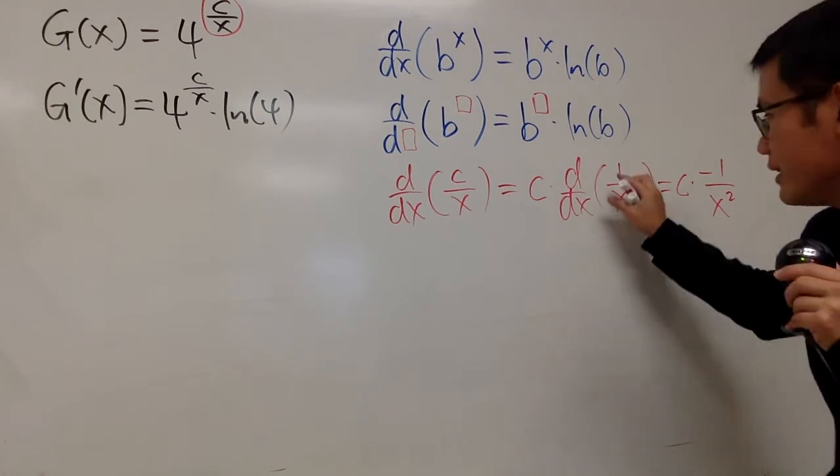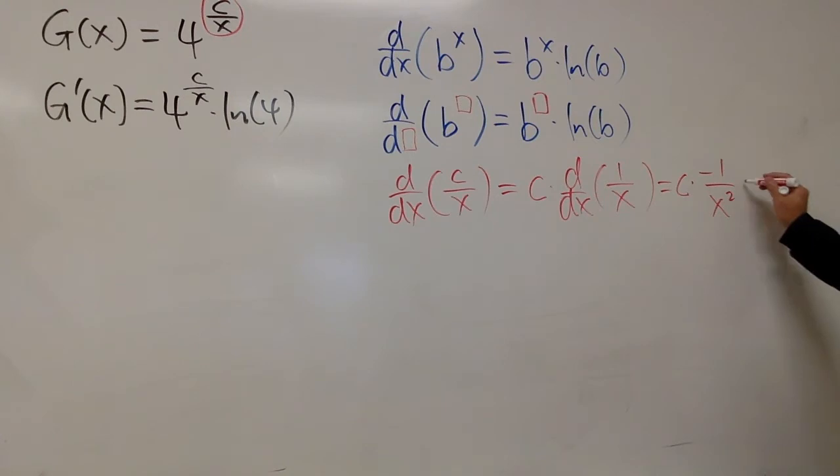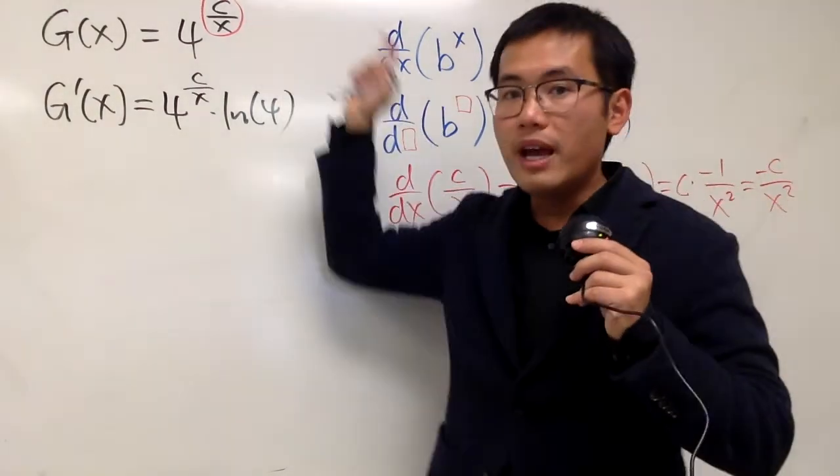Again, you could have written this as x to the negative 1, and then you do the power rule. But this right here is better. Anyway, c times negative 1 is negative c over x squared. And this is the derivative of c over x.